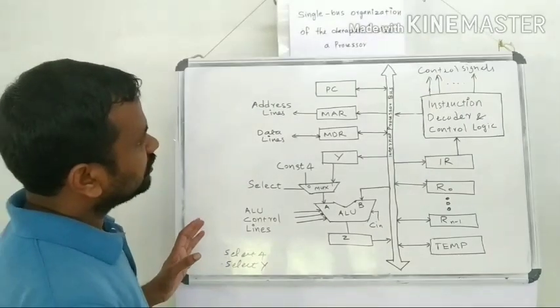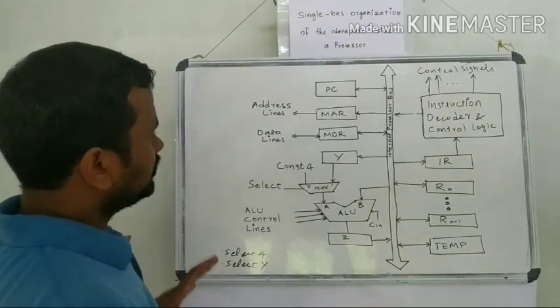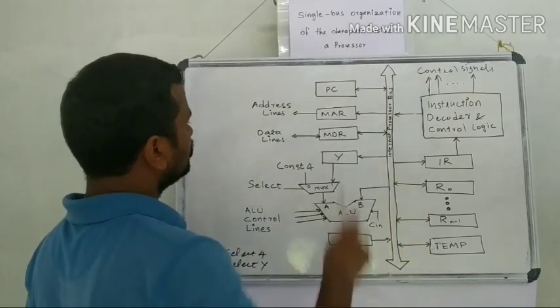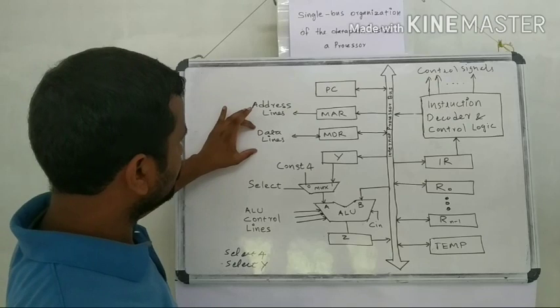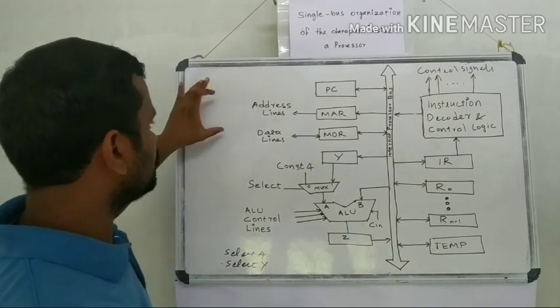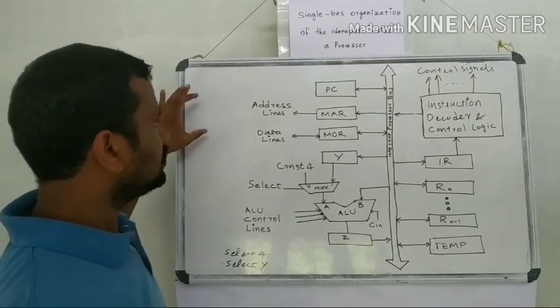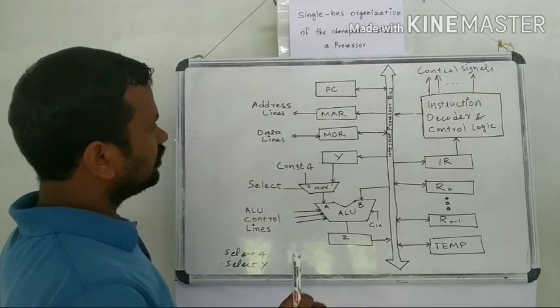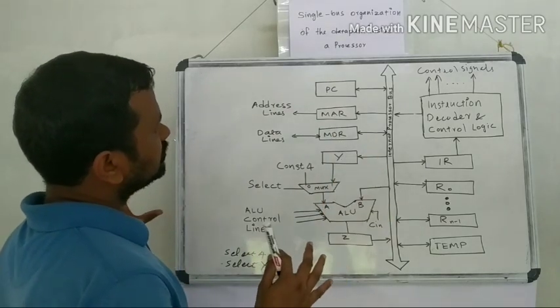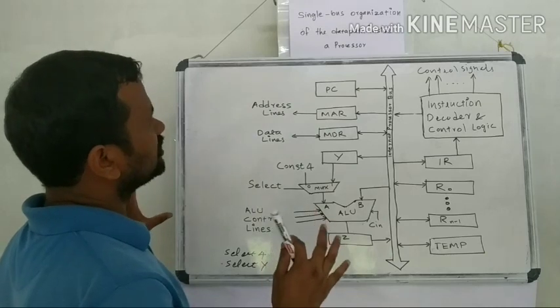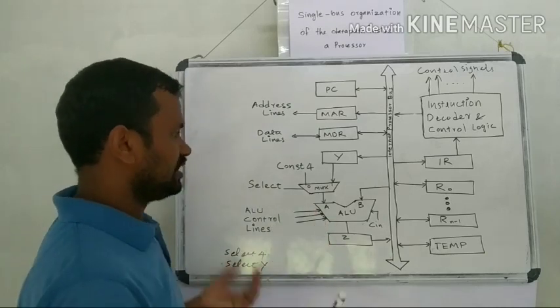These are the control signals that we already discussed. And this is our internal processor. So these address lines and data lines will be used for communicating with the external memory system. These are the different components inside the single-bus organization of the data path.